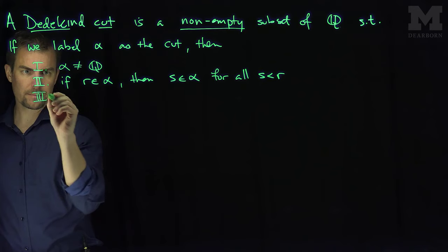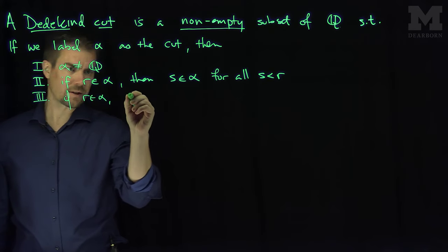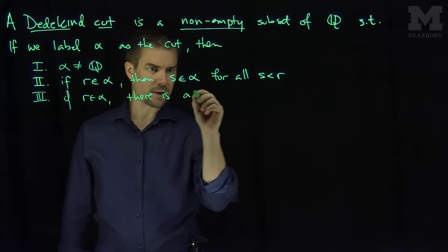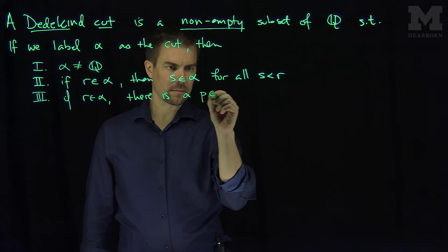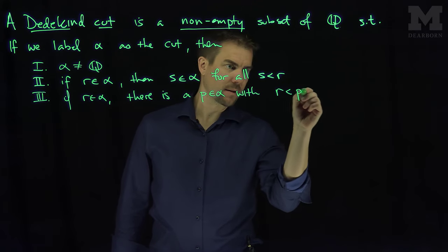Property three is that if R is in the cut, then there is a rational number, let's call it P, in the cut with R less than P.